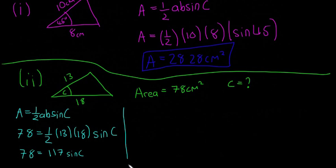And I'll just draw a line down here. We can continue over here. So then I'm going to divide, so in the next line here, I'm going to divide both sides by 117, so we can get the sine C on its own.